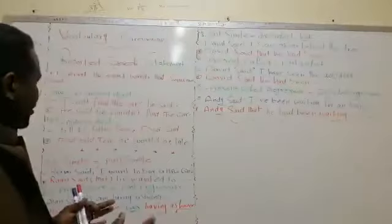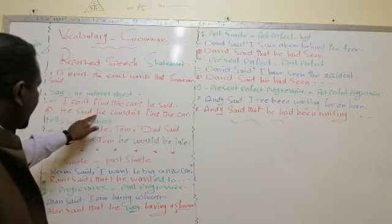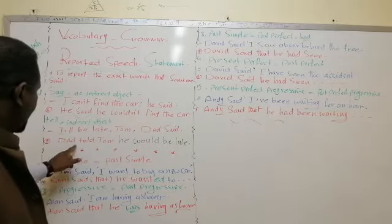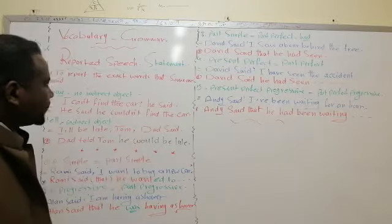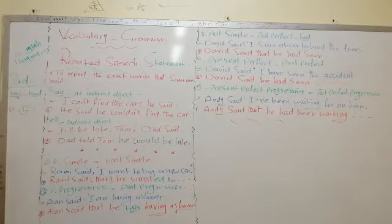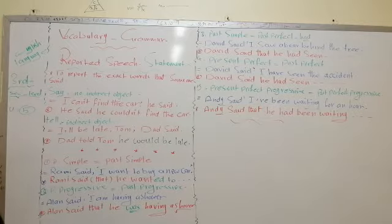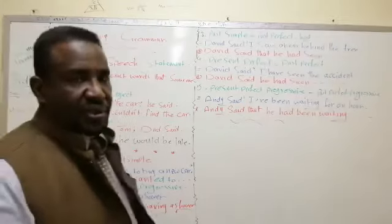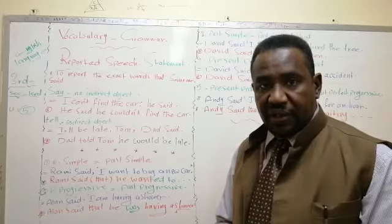If we want to speak about the technique: we change 'I' to 'he', and 'can' to 'could'. When we want to speak about the basic techniques for all tenses, for example, we can take present simple first. In present simple, the sentence automatically changes to past simple in reporting statements.